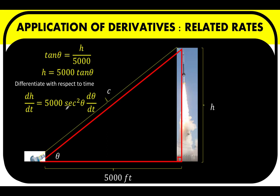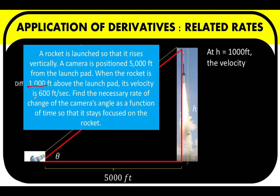Now we need to find what is the value of secant squared theta. It is given from the problem that at h equals 1,000 feet, the velocity is 600 feet per second. So we can now write dh over dt is equal to 600 feet per second. That is the velocity of the rocket with respect to time.